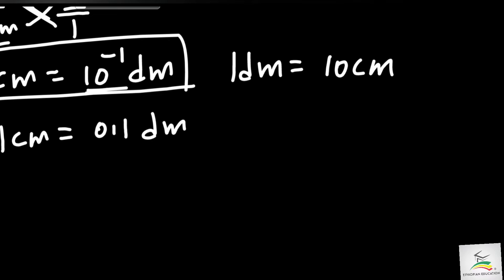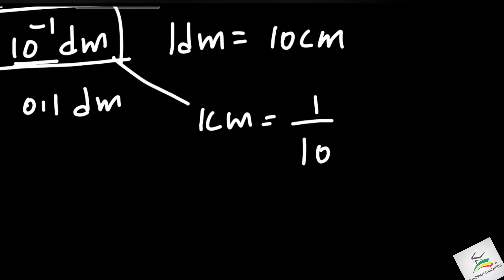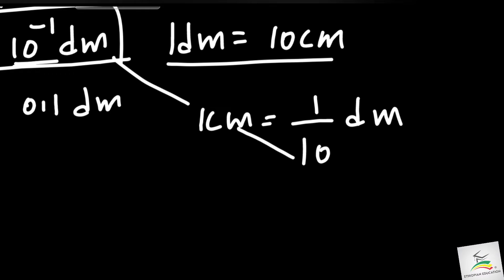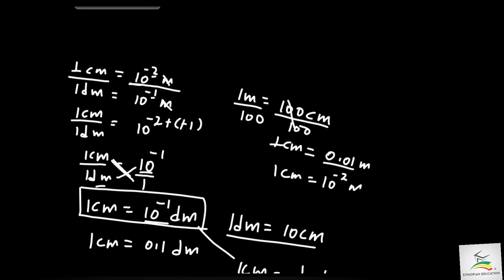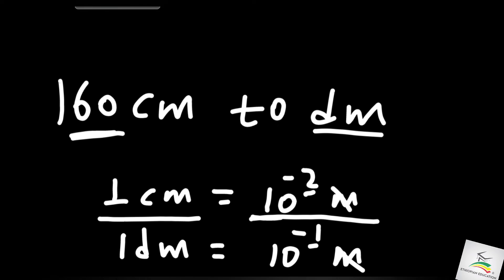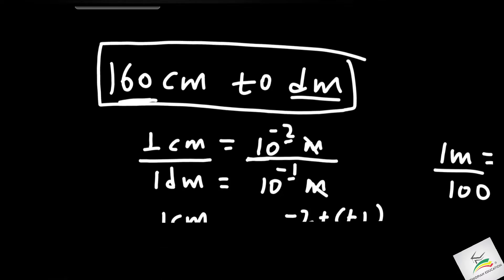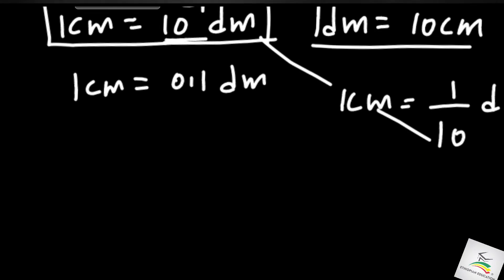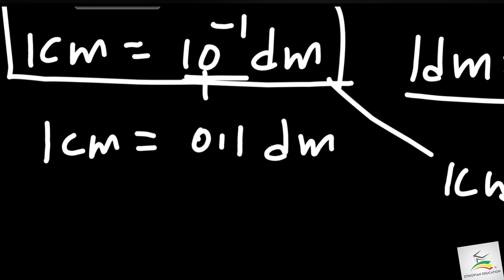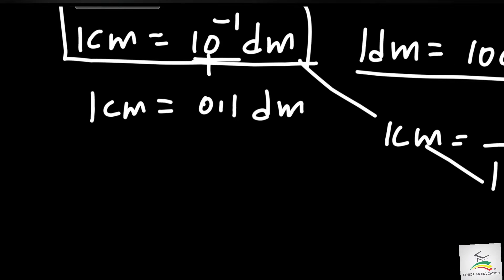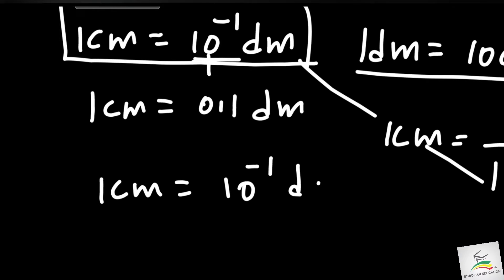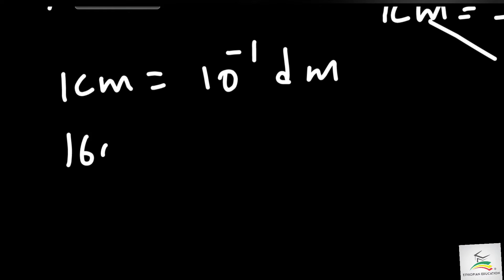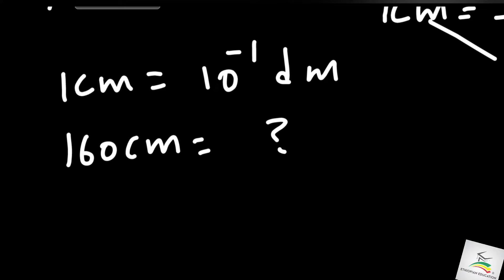So one centimeter equals ten to the power of minus one decimeters, meaning one over ten, which is 0.1 decimeter. That means 10 centimeters equals 1 decimeter. This is the relationship between centimeters and decimeters.